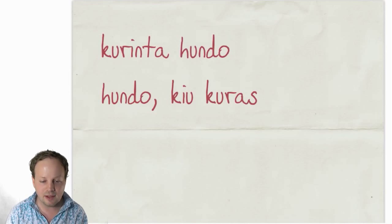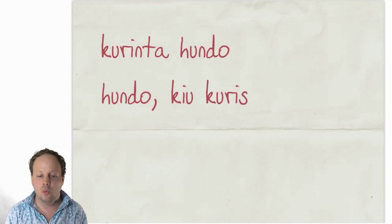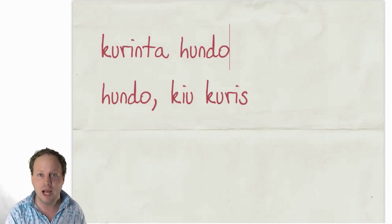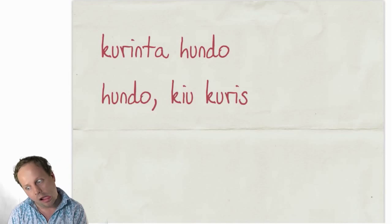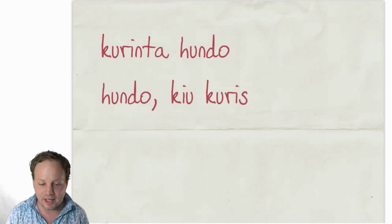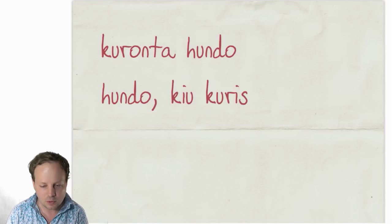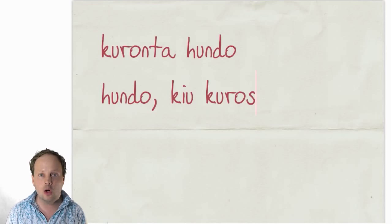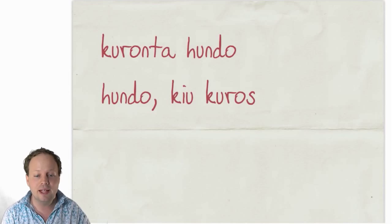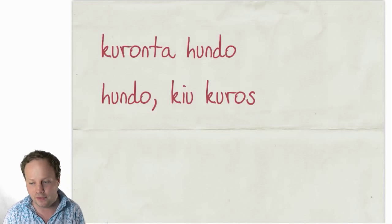So again, we can say KURINTA HUNDO is equivalent to HUNDO KIU KURIS — it would be 'a dog that had run,' a dog that ran in the past but is no longer running. You could point at a dog sitting there and say that was a KURINTA HUNDO — it's a dog that had been running but no longer. Or you could say KURONTA HUNDO — HUNDO KIU KUROS — it's a dog that's about to run. Maybe it's just spotted a car and it's about to take off, and you could say to your mate that there is a KURONTA HUNDO. It's a dog that's about to take off.